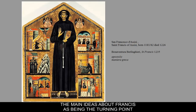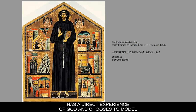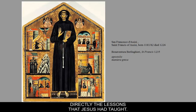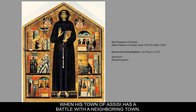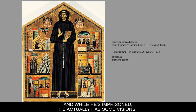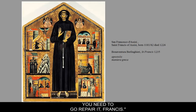The main ideas about Francis as a turning point leading to the Florentine Renaissance: Francis has a direct experience of God and chooses to model his life following directly the lessons Jesus taught. He starts out as the son of a wealthy cloth merchant. At one point he's taken prisoner when Assisi battles a neighboring town, and while imprisoned he has visions. Later, a crucifix speaks to him and says, 'My house is in ruins — go repair it, Francis.'